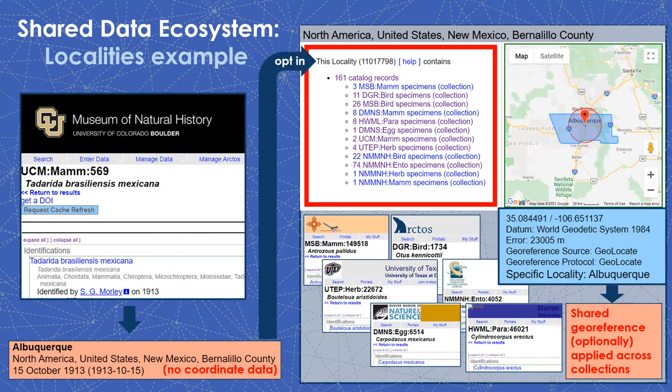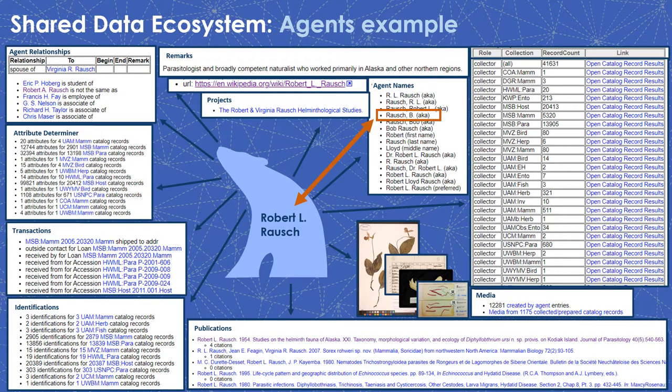For instance, when one collection creates a geo-referenced locality for Albuquerque, New Mexico, other collections can elect to use that same locality record for specimens housed at their institutions, leveraging community source coordinates to save staff time and redundant efforts. Similarly, agent data are collated together for collectors who have contributed specimens to multiple institutions, presenting a more holistic view of career-long activity rather than partitioning information by institution and limiting access to valuable summary data.